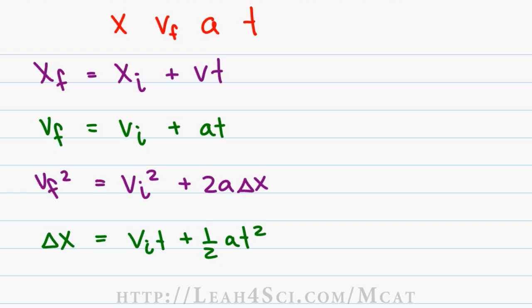Every equation given has 3 out of the 4 units. The first one has x, v and t but it does not have acceleration. The second one has v_f, we're ignoring v_i, a and t but it does not have displacement or x. The third one has v_f, it has acceleration and displacement but it does not have time. And finally, the last one has displacement, we're ignoring v_i, remember we're looking for v_f as our unit. We have acceleration, we have time, we do not have velocity final.